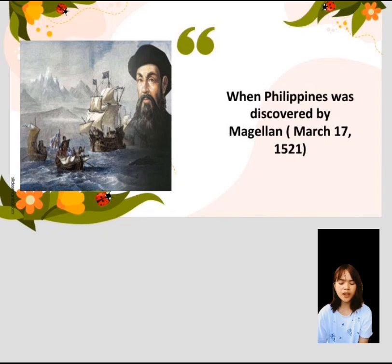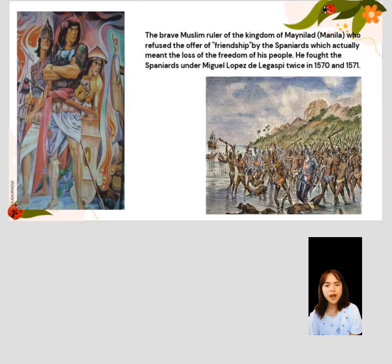Raja Suleiman was the brave Muslim ruler of the Kingdom of Manila who refused the offer of friendship by the Spaniards, which actually meant the loss of freedom of his people. He fought the Spaniards under Miguel Lopez de Legazpi twice, in 1570 and 1571.